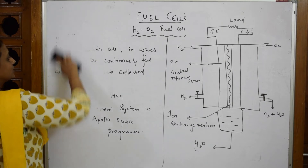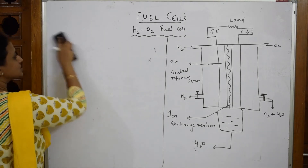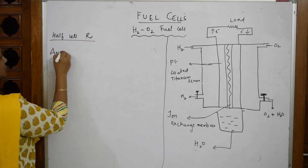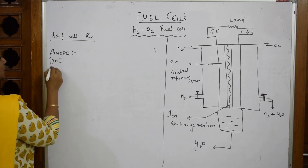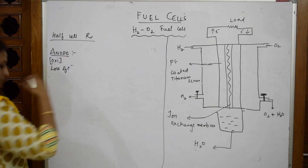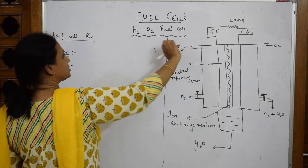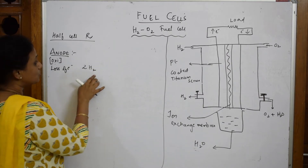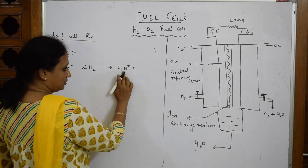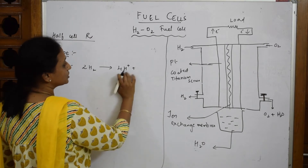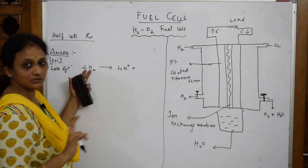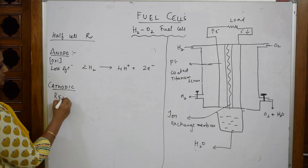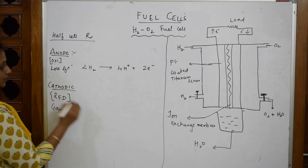Now let's write the half-cell reactions. At the anode, oxidation occurs — loss of electrons. At the anode, hydrogen is taken: 2H₂ → 4H⁺ + 4e⁻. Four H⁺ means four electrons — one electron per hydrogen atom, so two hydrogens give two electrons, and two moles of H₂ give four electrons.